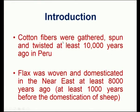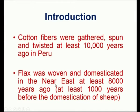Paper is also made up of fibers, which is a different monomer that undergoes polymerization to produce this kind of material. Depending upon the nature of the monomer, the fiber content will vary. Cotton fibers were gathered, spun and twisted at least 10,000 years ago in Peru — a very old history behind fibers. Flax was woven and domesticated in the near east at least 8,000 years ago, approximately 1,000 years before the domestication of sheep. Overall, fibers are not a new material — they have been known for approximately 10,000 years, yet demand in industry and application remains very high.